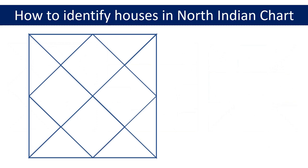If you want to know more about the ascendant or lagna then I have done a separate video on it. The first house position in the chart is the diamond shaped rectangle highlighted on your screen. No matter what names, symbols, or numbers you see in this diamond shaped rectangle in the North Indian chart, it will always be the first house. You will always find the ascendant or lagna placed in this house, typically denoted by the abbreviation ASC. You may find lagna written in place of ascendant in some charts and they both mean the same thing.